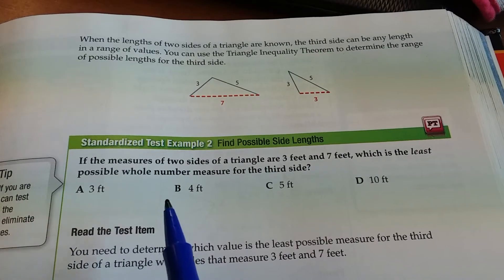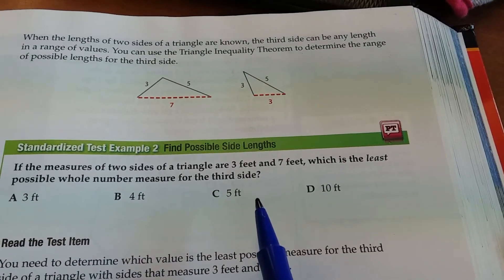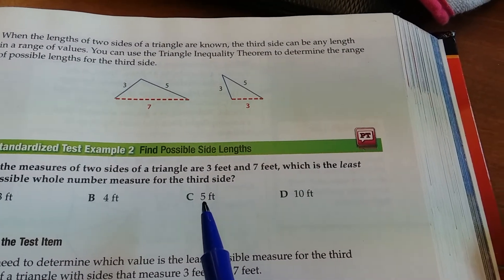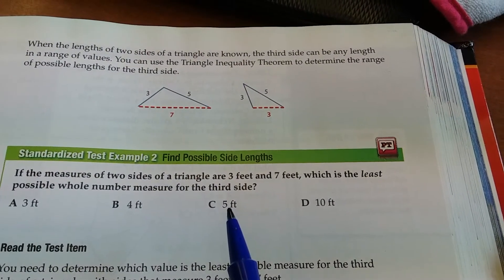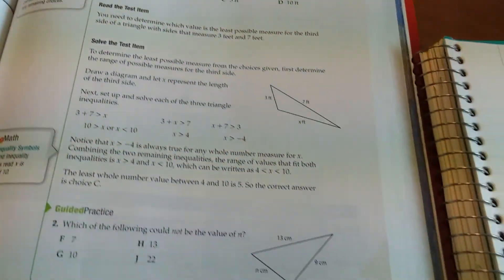So we can rule out A and B. Okay, so the answer is going to be C here. C is the smallest possible whole number measure here. Alright, so let's look at the example two here.